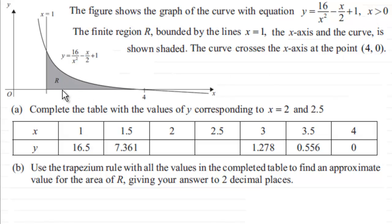And we have this finite region R bounded by the lines x equals 1, the x-axis and the curve shown shaded. The curve also crosses the x-axis at this point here 4, 0.